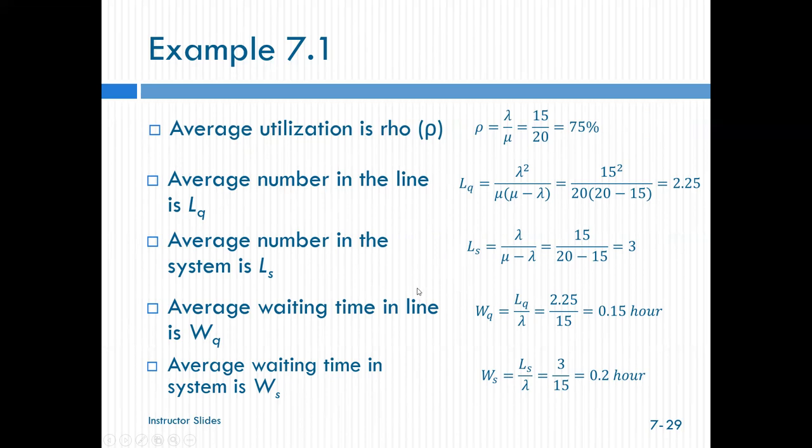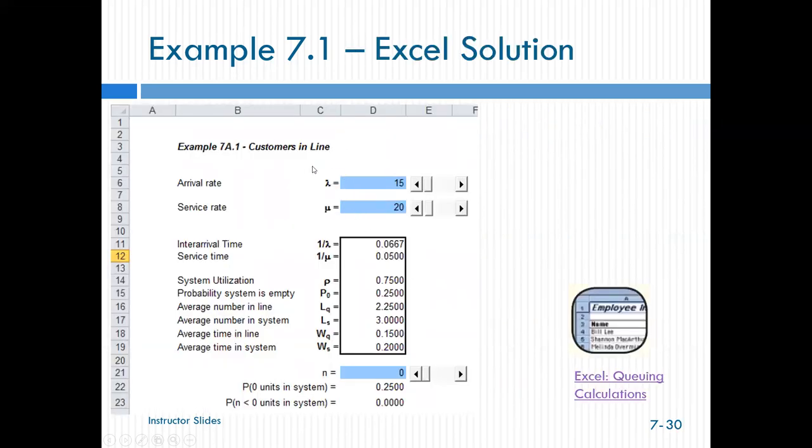The other part that's super cool is that there is this spreadsheet. And if you go to, I think it's 7.4 practice what you learned. I've loaded this spreadsheet there. If you put in lambda of 15 and mu of 20, it's going to calculate all of that for you. How awesome is that? So now I know rho, 75%. How many people are waiting in line? 2.25. How many people are in the system? Three. What's my average waiting time? 0.15. Now this is of an hour because we're 15 people per hour and 20 per hour. Average time in the system, 0.2 of an hour.